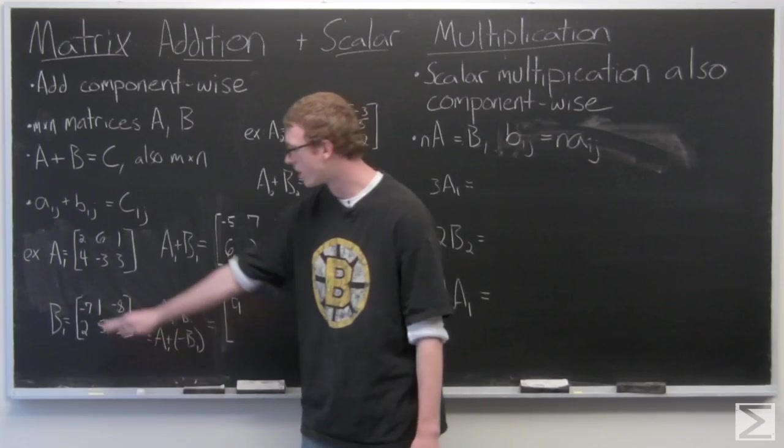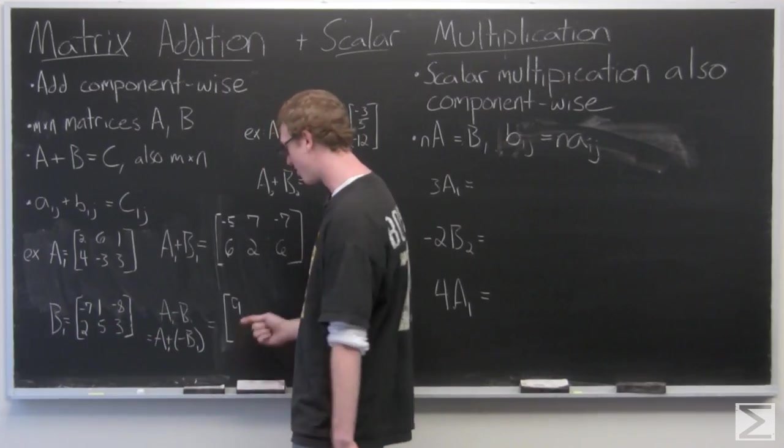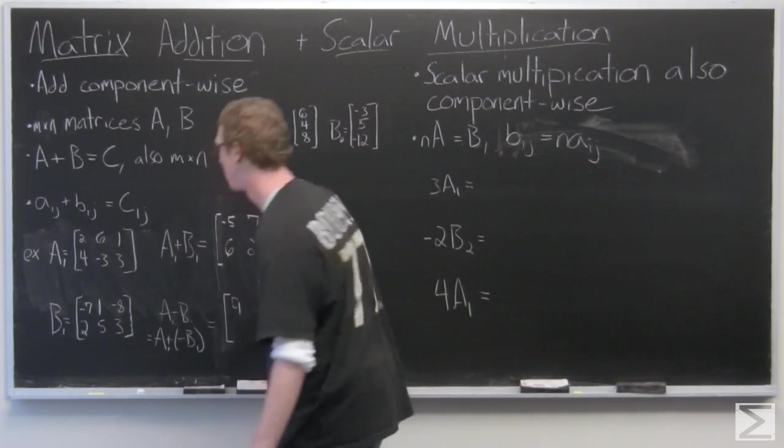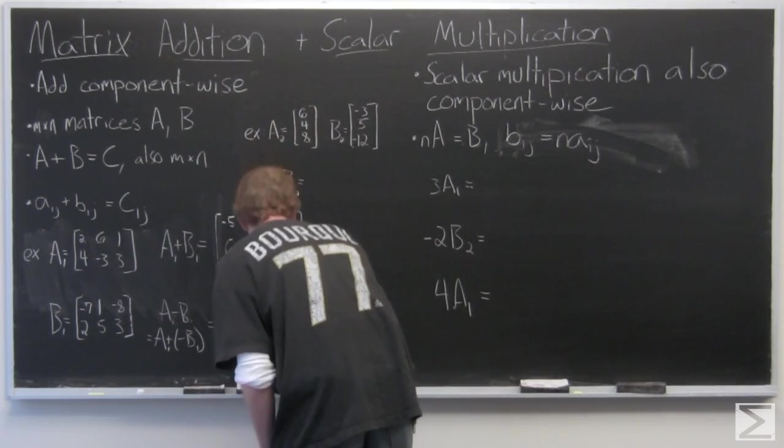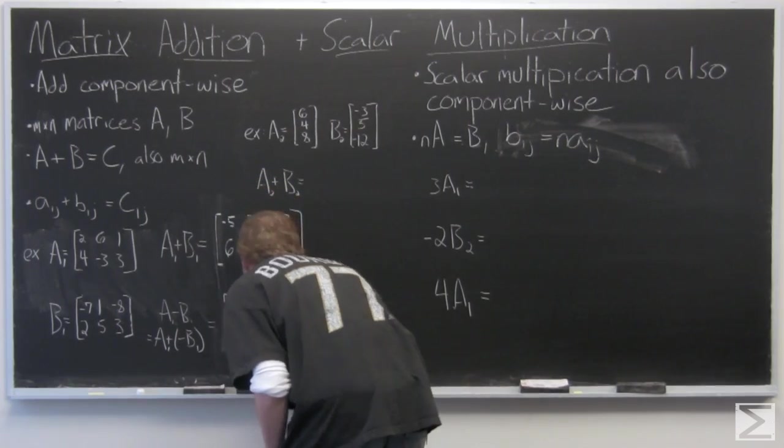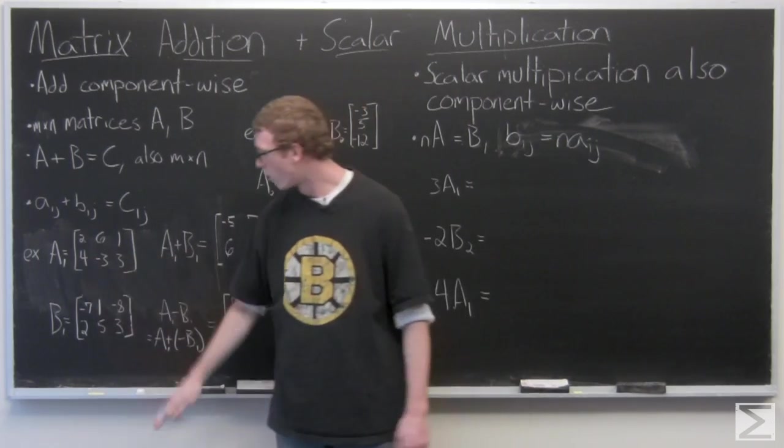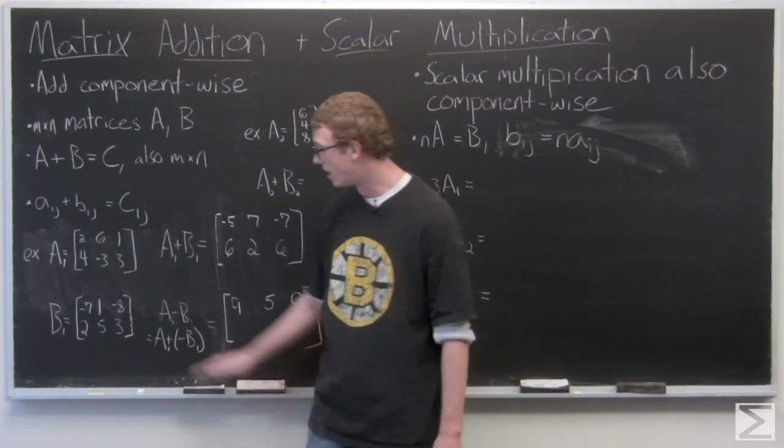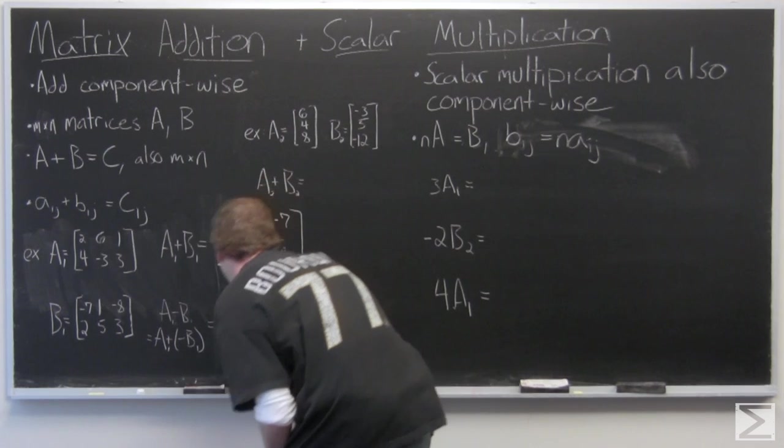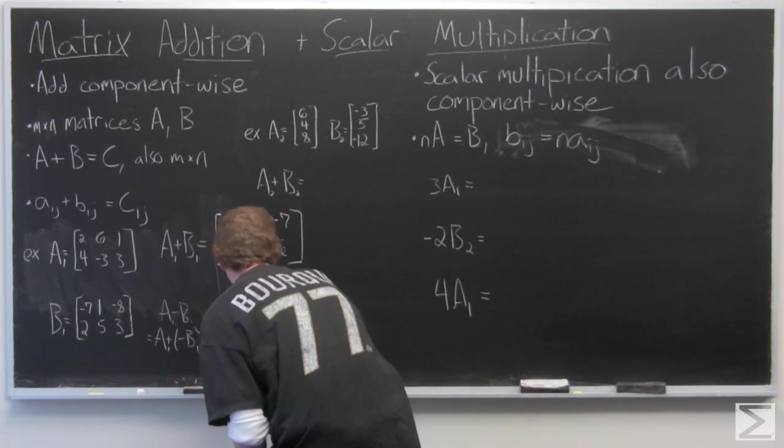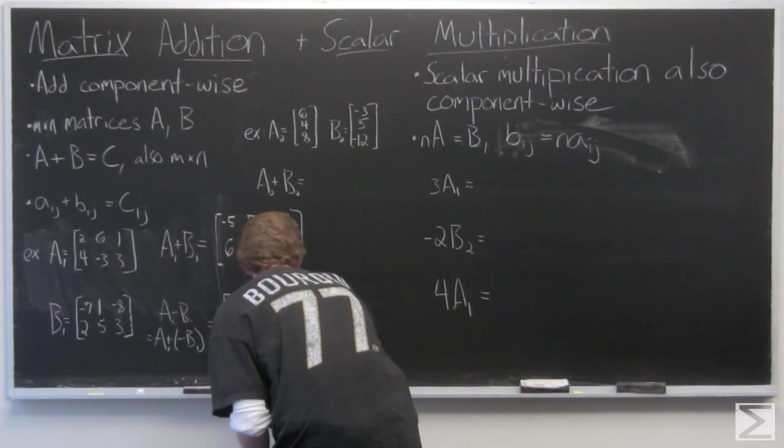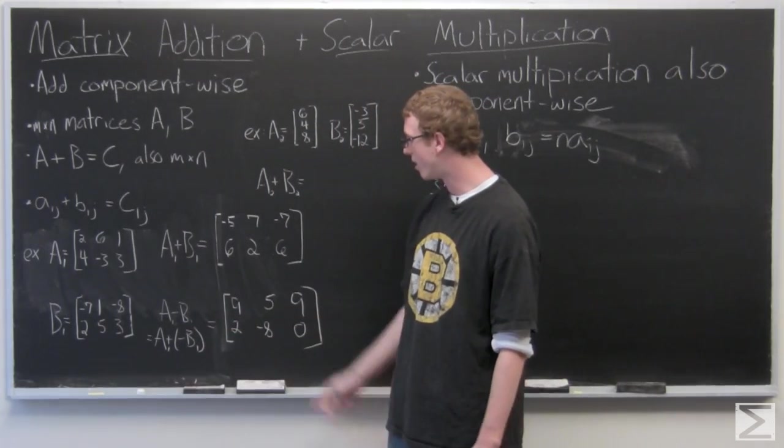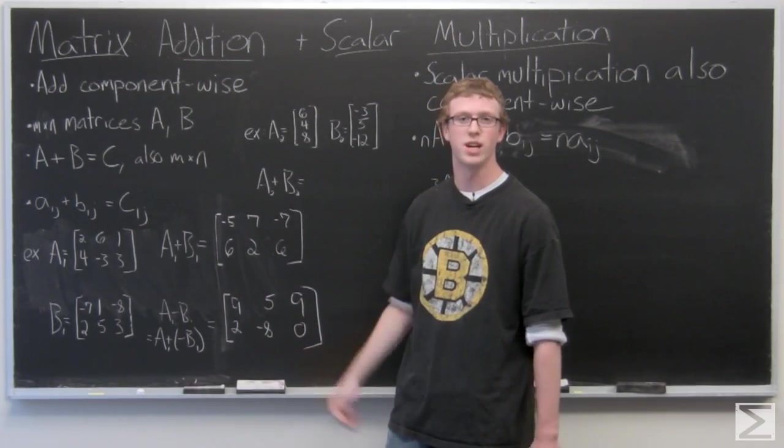So it's going to be 2 plus 7, so that's going to be 9, 6 minus 1, 1 plus 8, and then 4 minus 2, negative 3 minus 5, and 3 minus 3. And the resultant matrix A1 plus negative B1: 9, 5, 9, 2, negative 8, 0.